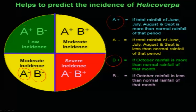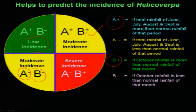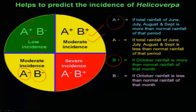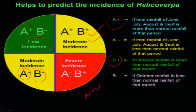If the average rainfall from June to September is high and October rainfall is low, we get a very low incidence in November, which every farmer wants. If both June-to-September and October rainfall are high, we get a moderate incidence. The most serious scenario, indicated in red, is when June-to-September rainfall is low but October rainfall is above average — this results in very severe incidence in November. This is the sort of prediction we are getting.